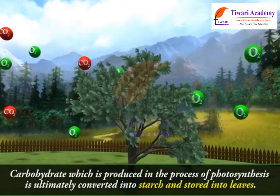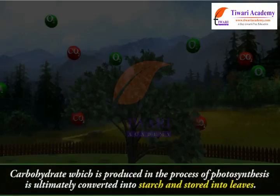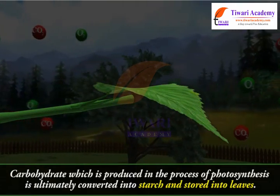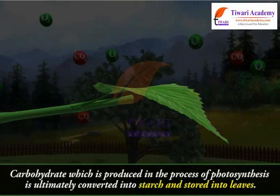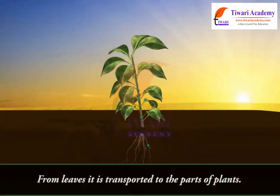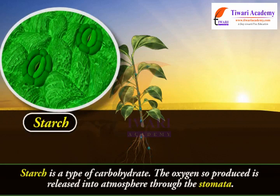The carbohydrate produced in the process of photosynthesis is ultimately converted into starch and stored in the leaves. From the leaves, it is transported to other parts of the plant. Starch is a type of carbohydrate. The oxygen produced is released into the atmosphere through the stomata.